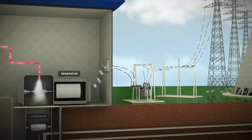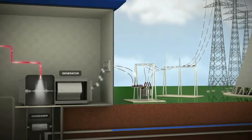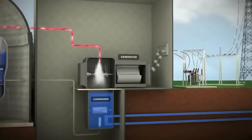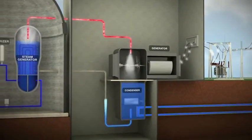After the steam is used in the turbines, it is drawn into a condenser, where it is cooled and condensed back into water and pumped back to the steam generator to be heated and reused.